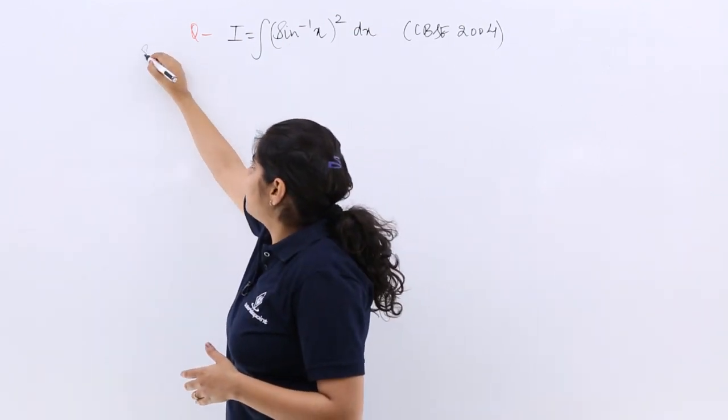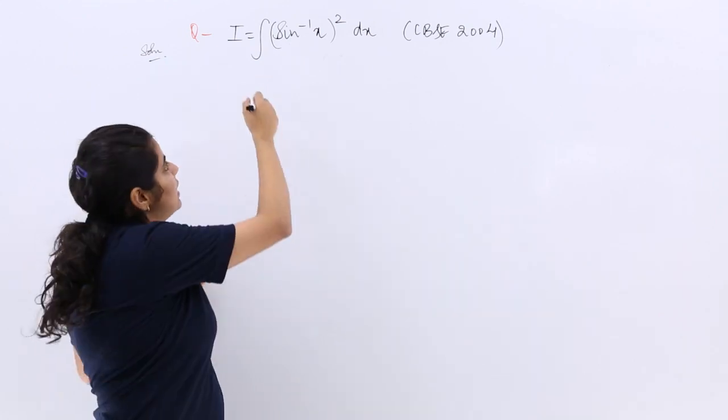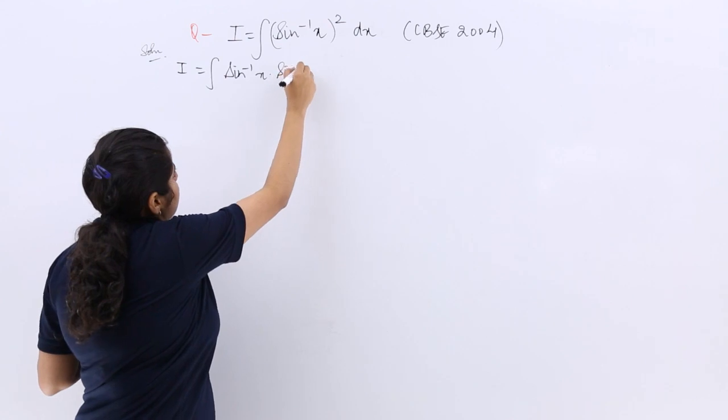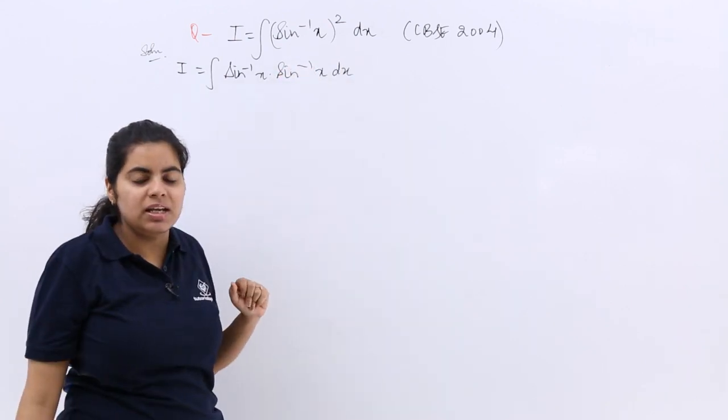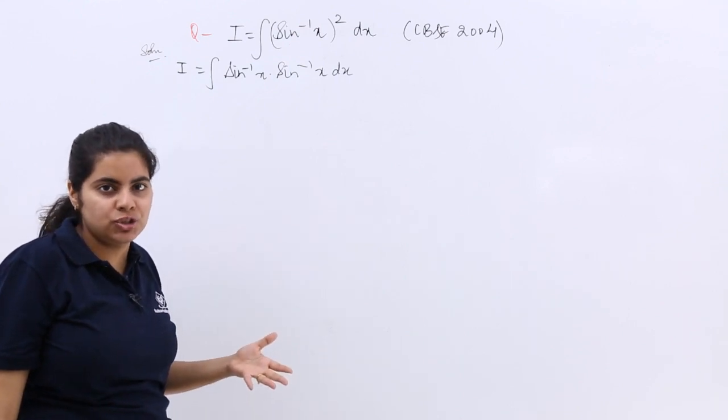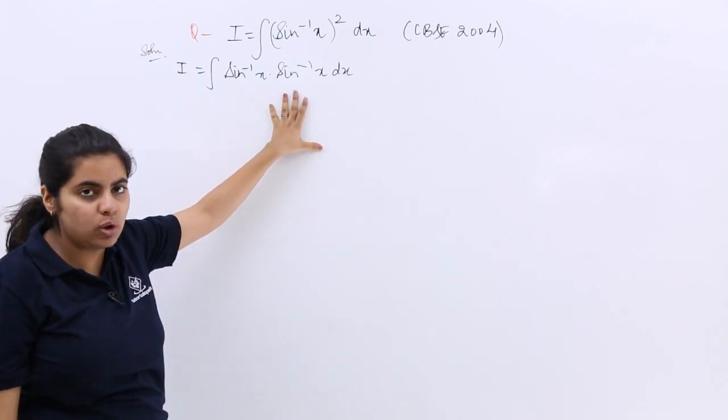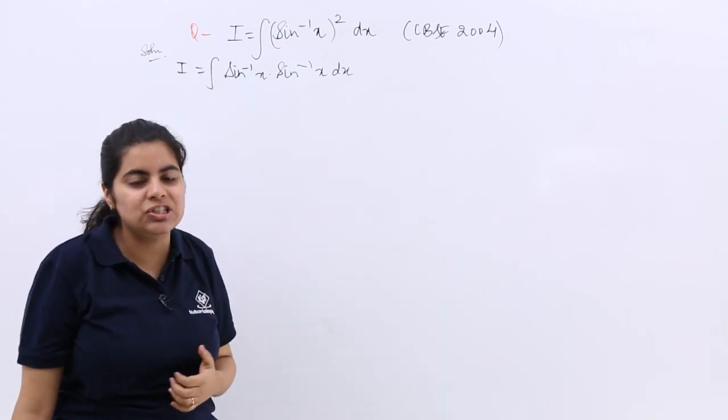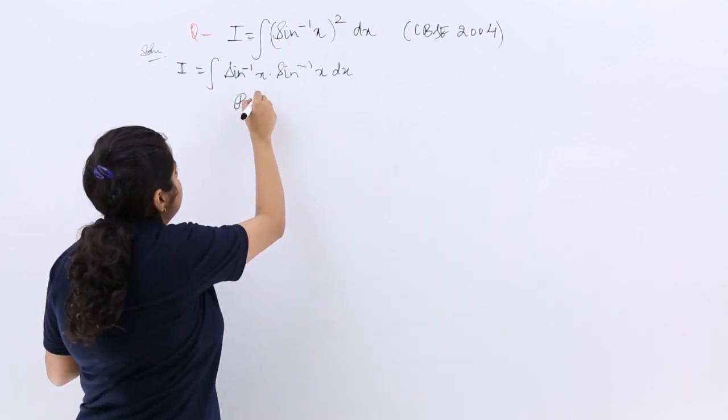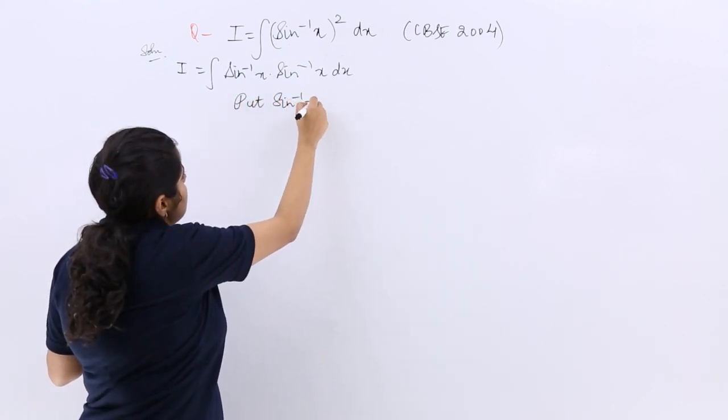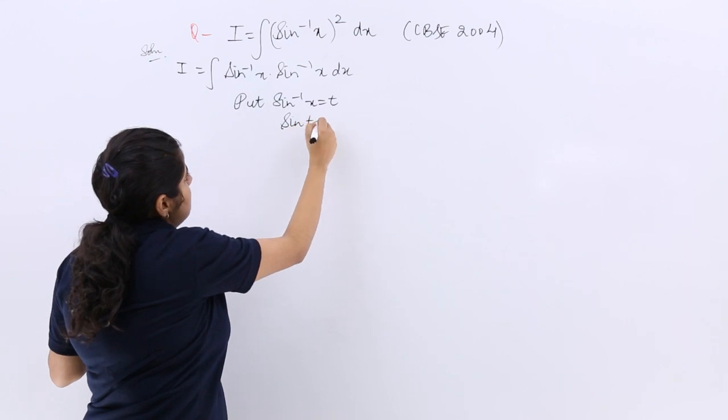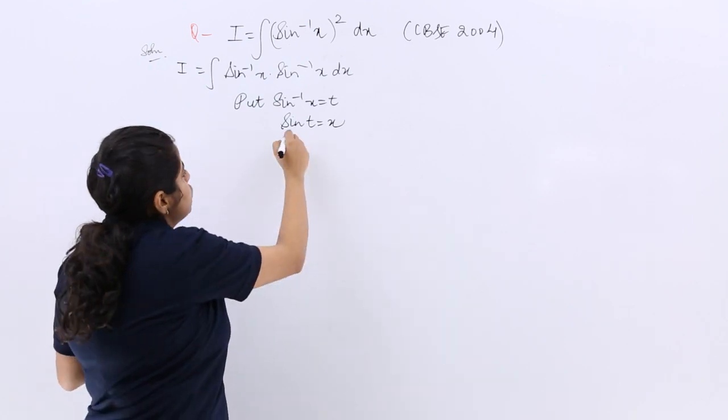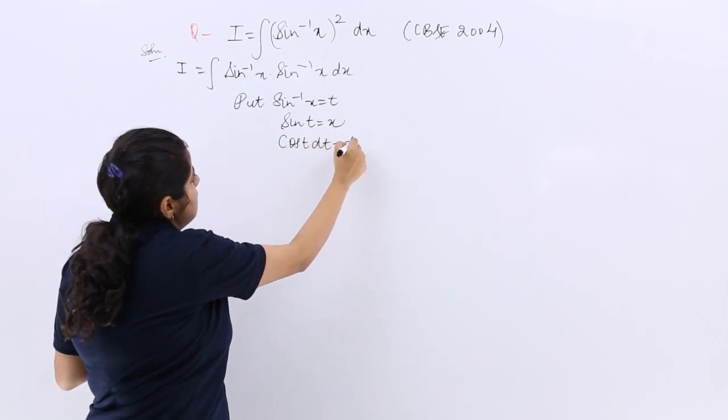So can we just break these up? Breaking up means I write I equals sin inverse x product sin inverse x dx. Now, inverse functions would not allow me to use ILATE directly—indirectly I can use it but not directly. So what I do to simplify: put sin inverse x equals t, that means sin t equals x. I have to then differentiate. So sin differentiation is cos t dt equals dx.